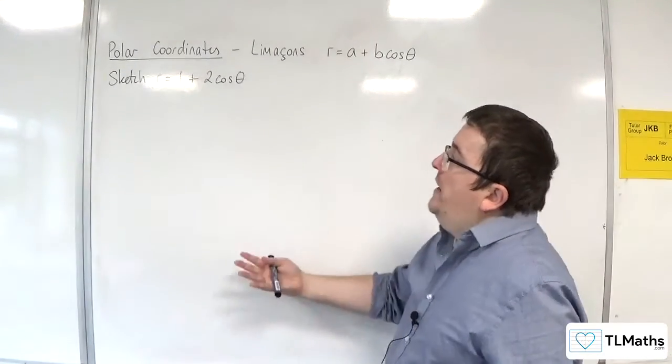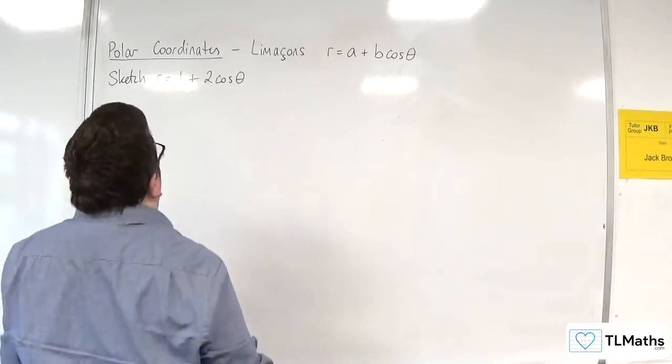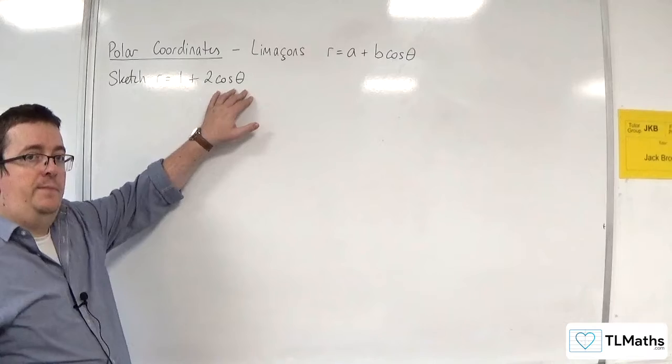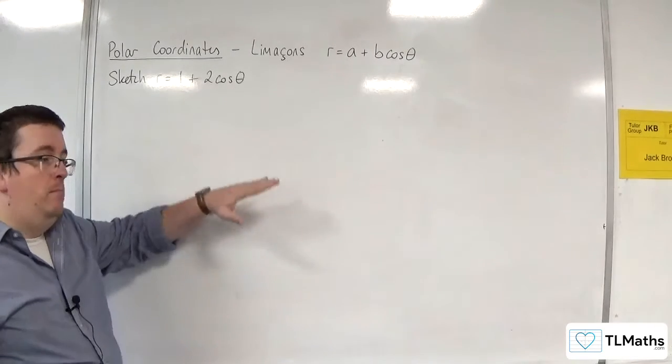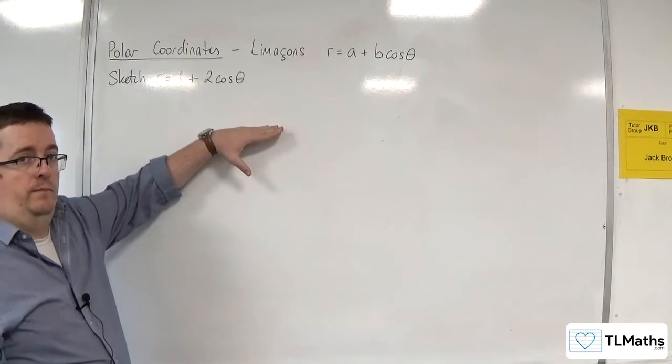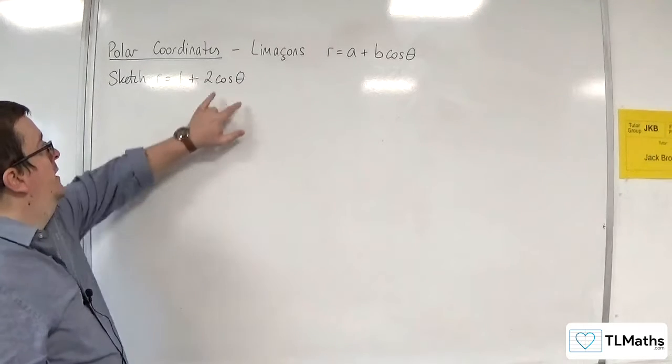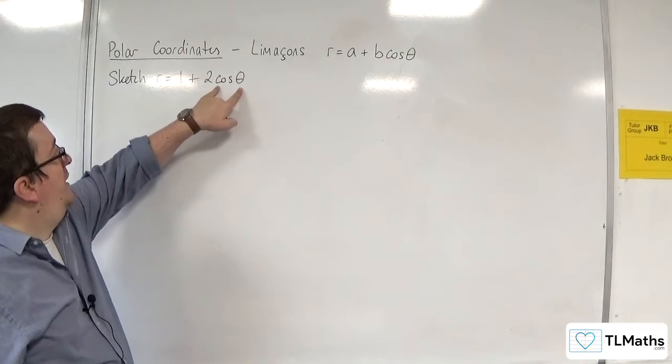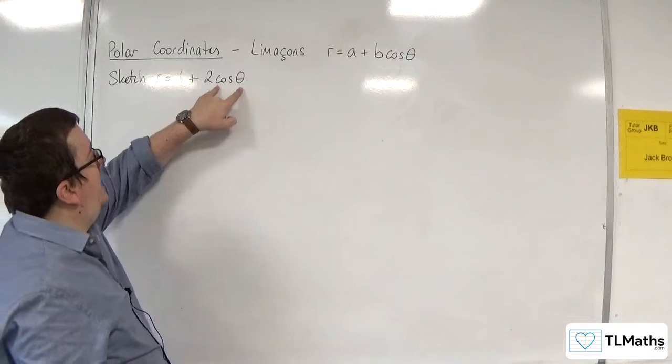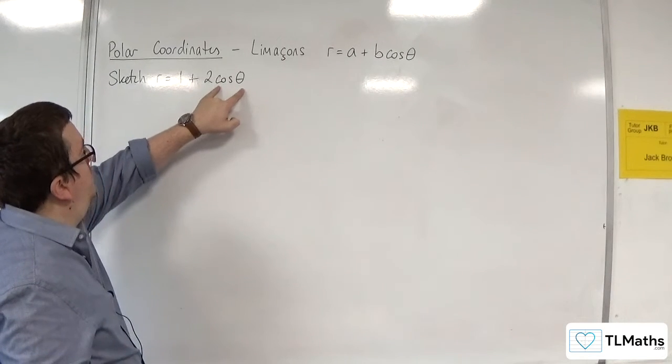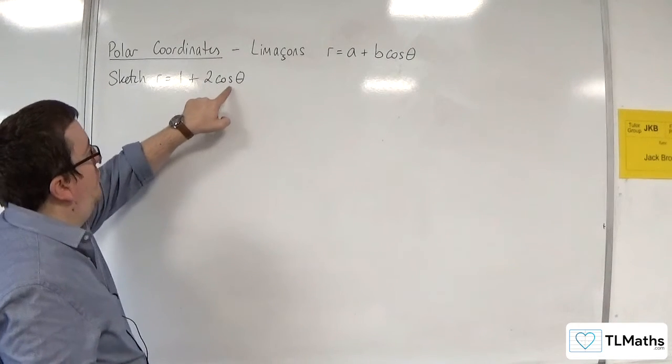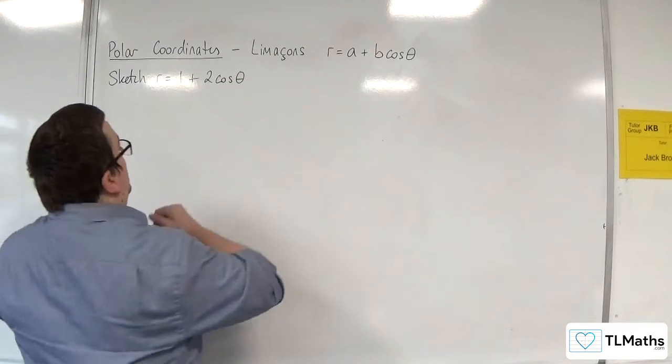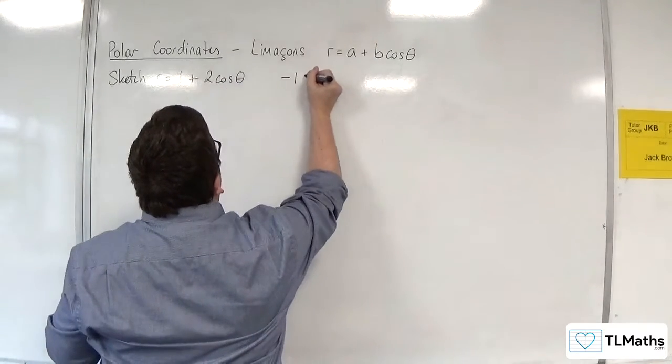So when we look at sketching this curve, the first thing that you're going to want to think about is that cosine theta goes anywhere between minus 1 and 1. Just think about the regular cosine curve. So if that's the case, then at its least, this is minus 1. So we would have 1 plus 2 lots of minus 1. So 1 take away 2, so minus 1. So the lowest that r can go is minus 1.